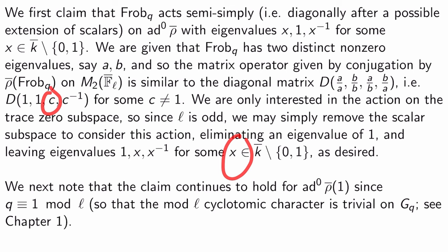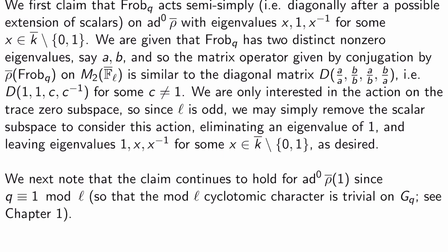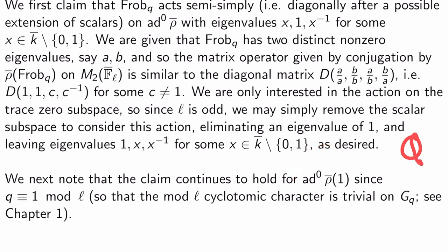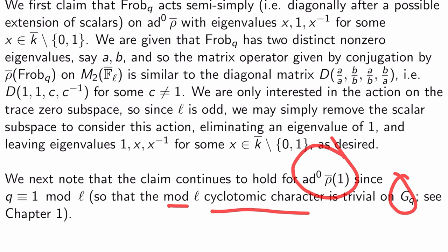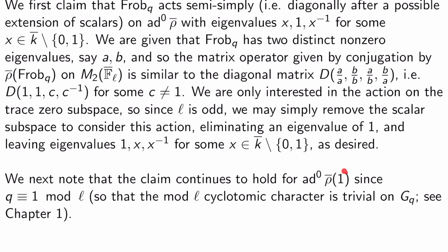We are only interested in the action on the trace-zero subspace, so since L is odd, we simply remove the scalar subspace, which gets rid of an eigenvalue of 1, leaving behind eigenvalues 1, x, and x-inverse for some x in k-bar that's not 0 or 1. So my x here is just my c from before. All of this continues to hold for ad^0 rho-bar(1) because q is 1 mod L by definition of Q, which means the mod-L cyclotomic character is trivial on G_Q, so the Tate twist doesn't affect things.